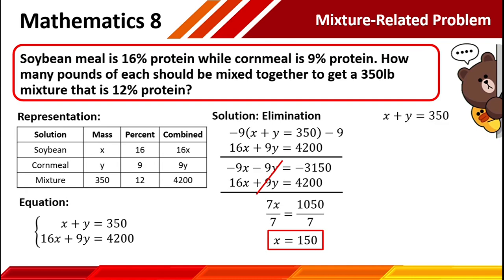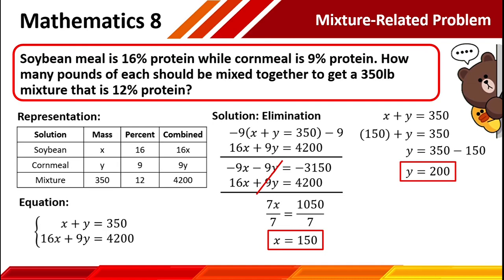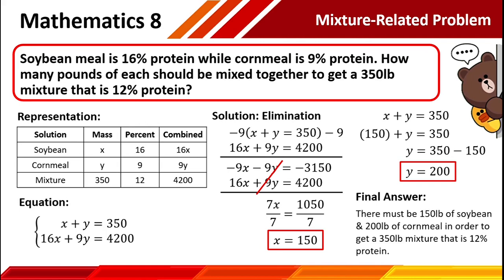To find the value of y, use the first equation: x plus y equals 350. Substituting the value of x, we have 150 plus y equals 350. Using the addition property of equality, subtract 150 from both sides, so y equals 350 minus 150, which simplifies to y equals 200. x corresponds to the mass of soybean, and y corresponds to the mass of cornmeal. Therefore, the answer is: we need 150 pounds of soybean and 200 pounds of cornmeal to get a 350-pound mixture that is 12% protein.